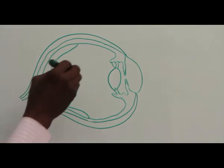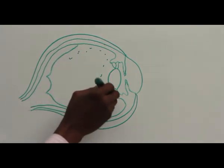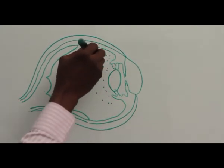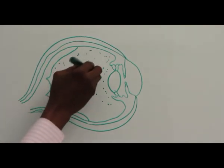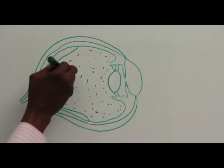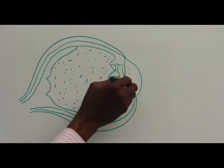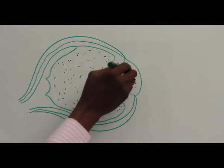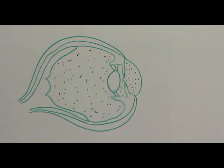So the cavity here is filled with fluid, known as vitreous humor, which maintains the shape of the eye. Then in the front is also a cavity filled with a humor, known as aqueous humor.